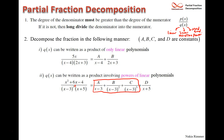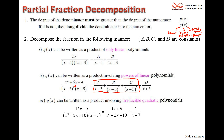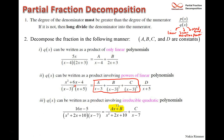Case 3 — an irreducible quadratic factor, e.g., x² + 2x + 10. This is the one and only situation where the numerator is not just a constant — it is a linear expression Ax + B (or Bx + C). Every other factor type has a constant numerator; only the irreducible quadratic gets a linear numerator.